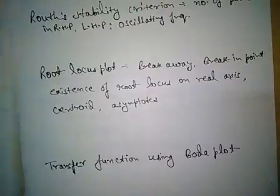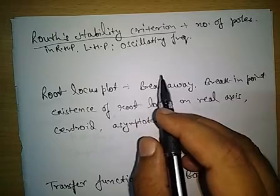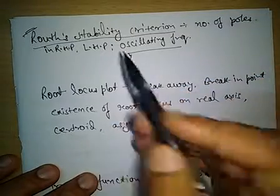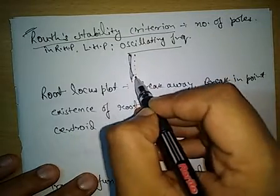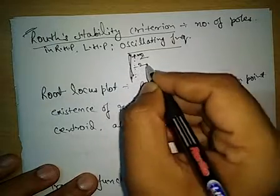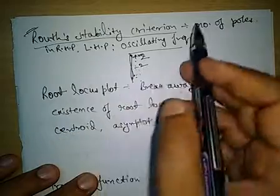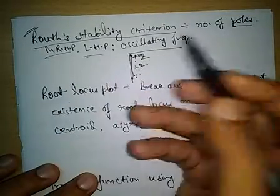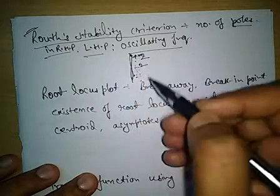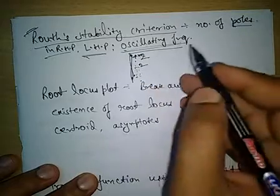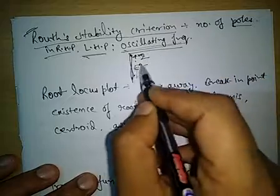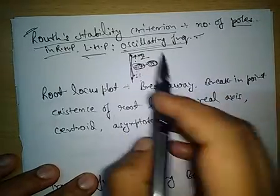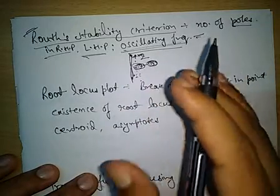The next topic is the Routh Stability Criteria — a very famous and frequently asked topic, and very easy to solve. A Routh table is formed and we decide whether the system is stable or not. If there is a sign change in the numerical values of the first column, the system is unstable. Questions can also ask how many poles are in the right half plane or left half plane, and at what frequency the system is oscillating when a row becomes all zeros.